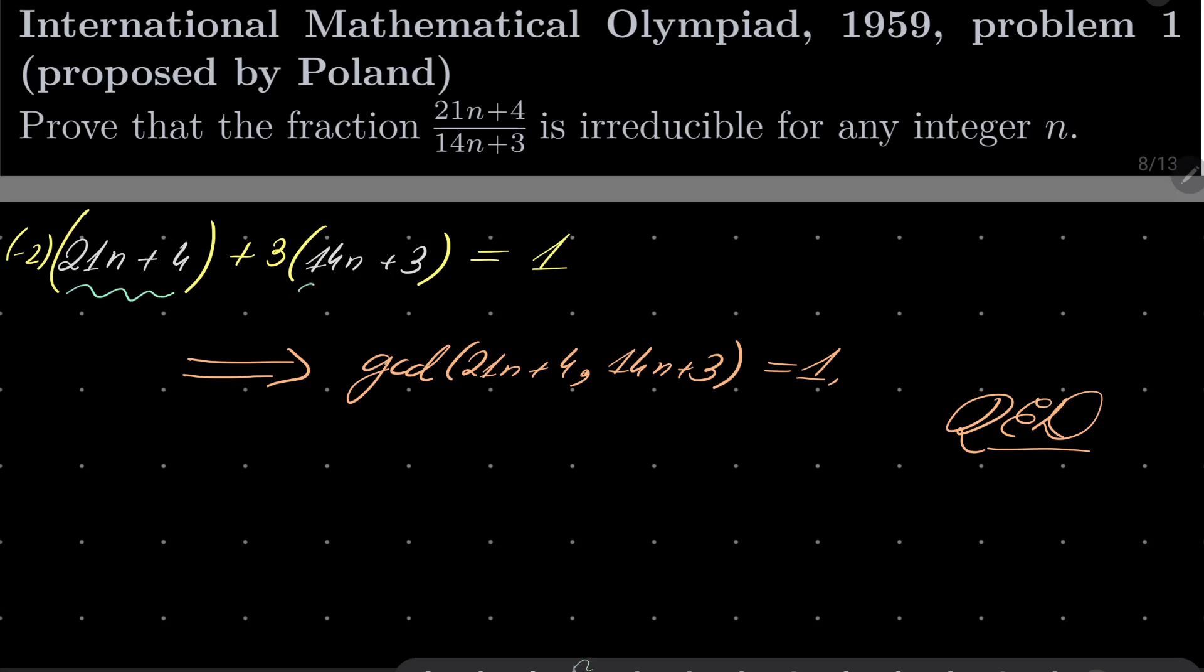If p divides this number and divides this number, it should also divide 1, but the only number dividing 1 is 1 itself. And that closes our problem.